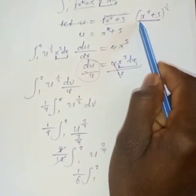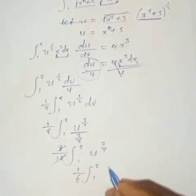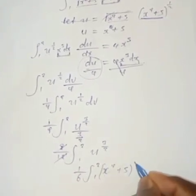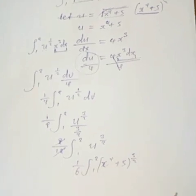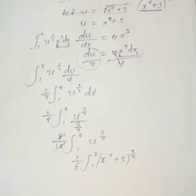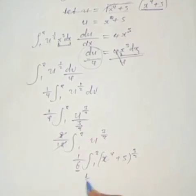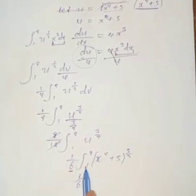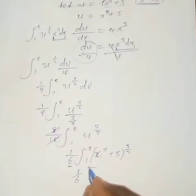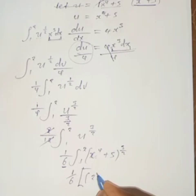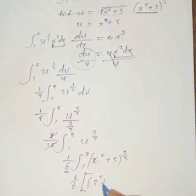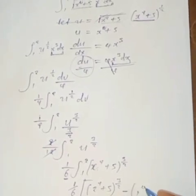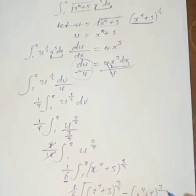Remember I said that u equals x to the power 4 plus 5. So I will write x to the power 4 plus 5, to the power 3 over 2. Now we apply the limits: we take 2 to the power 4 plus 5, to the power 3 over 2, minus 1 to the power 4 plus 5, to the power 3 over 2.